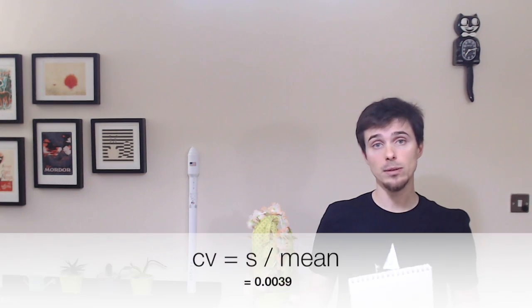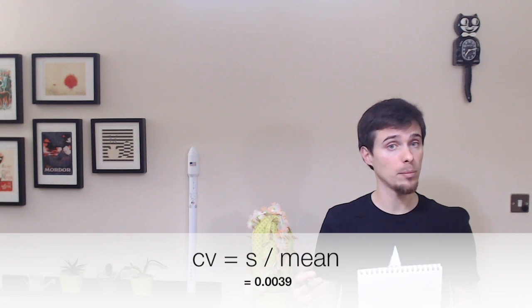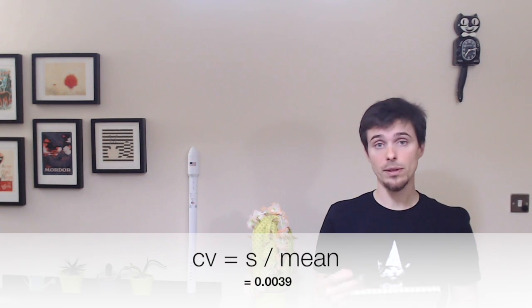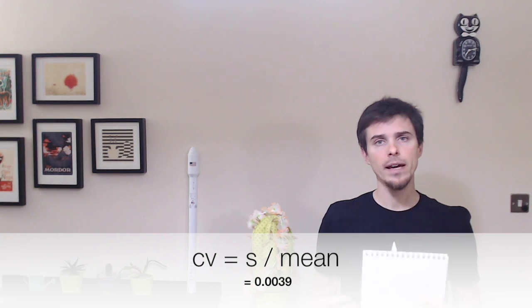The coefficient of variation is another measure of dispersion, but it's relative, defined as the ratio between the standard deviation and the sample mean. In our case, it's 0.29% — it has no units — and it's very useful when you want to compare relative errors, for example when comparing two different samples with two different bolt lengths.